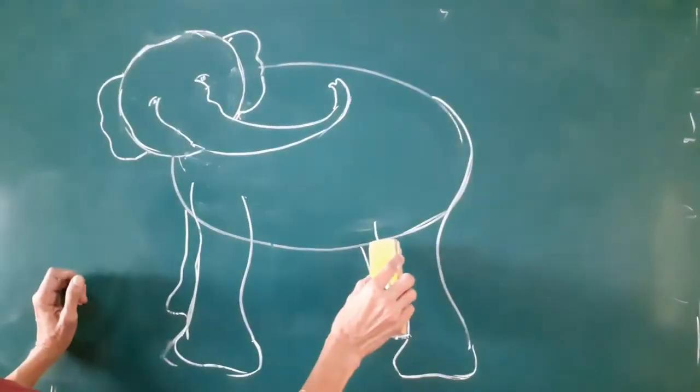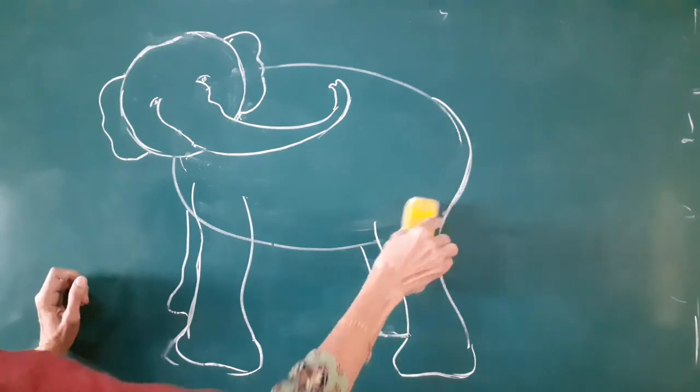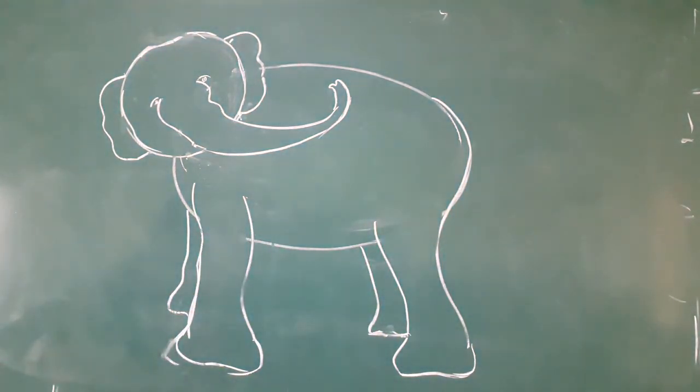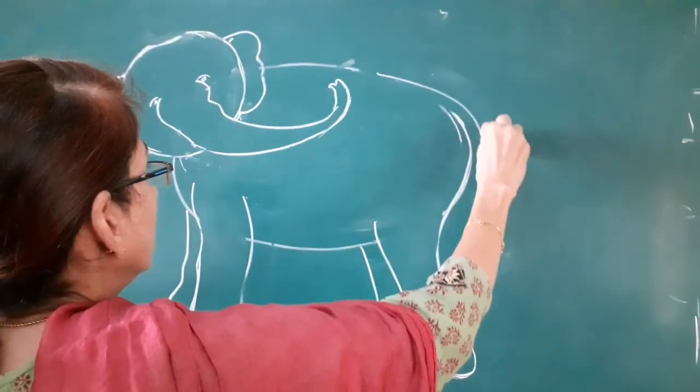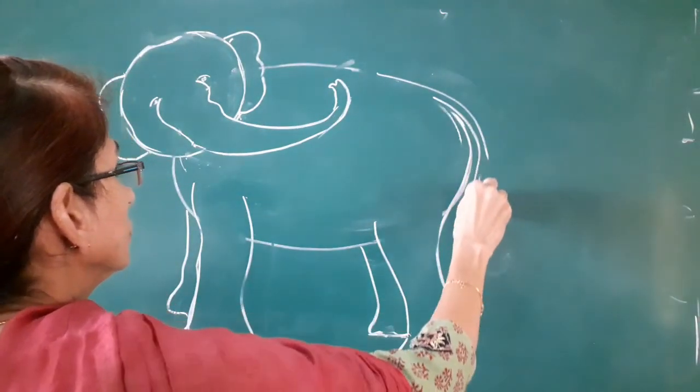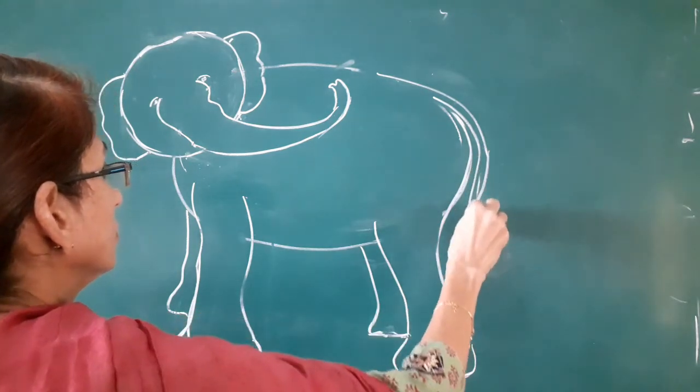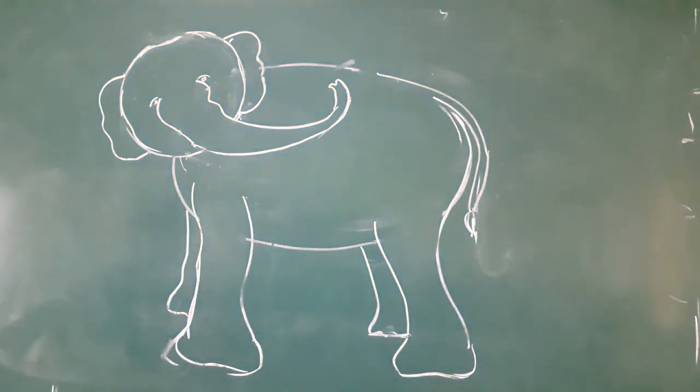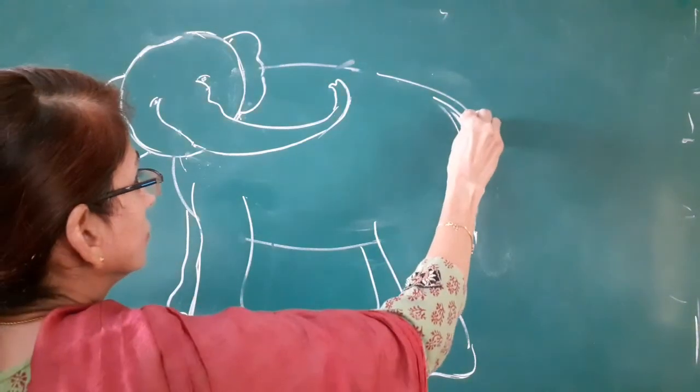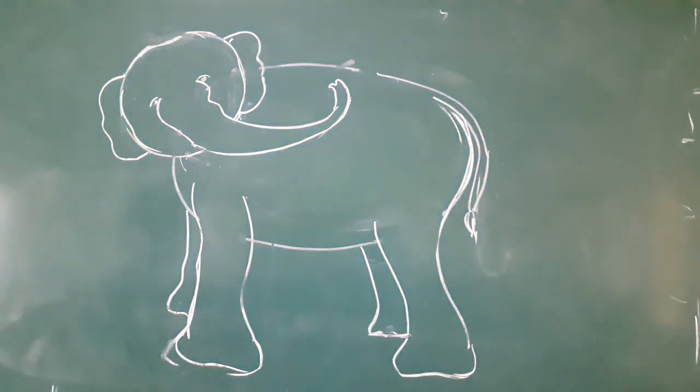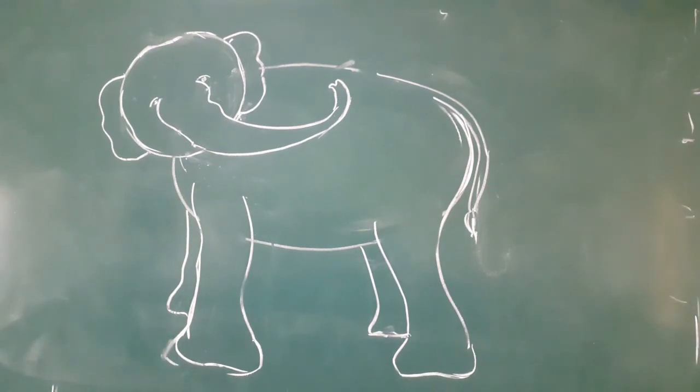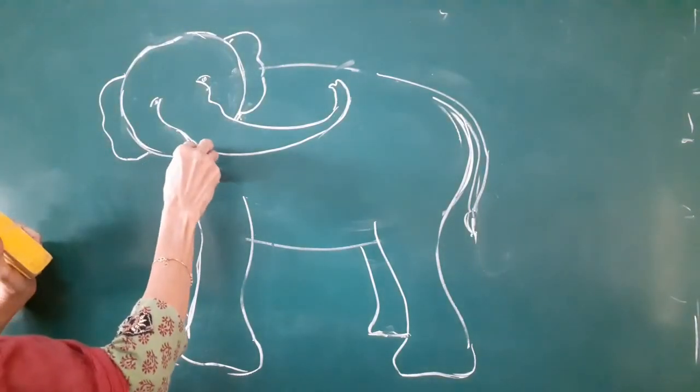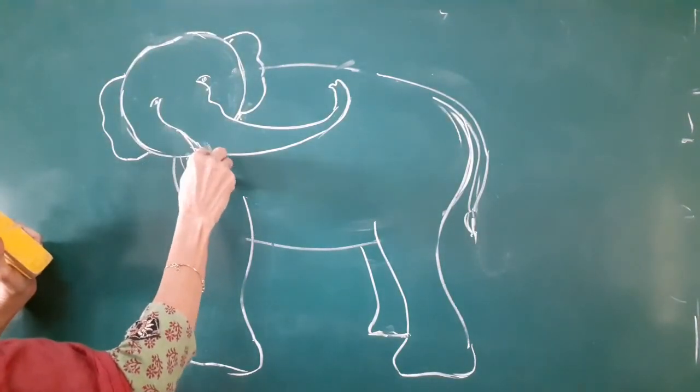You will erase the extra lines on the tail. And you can see like this, like the ear of the elephant, here.